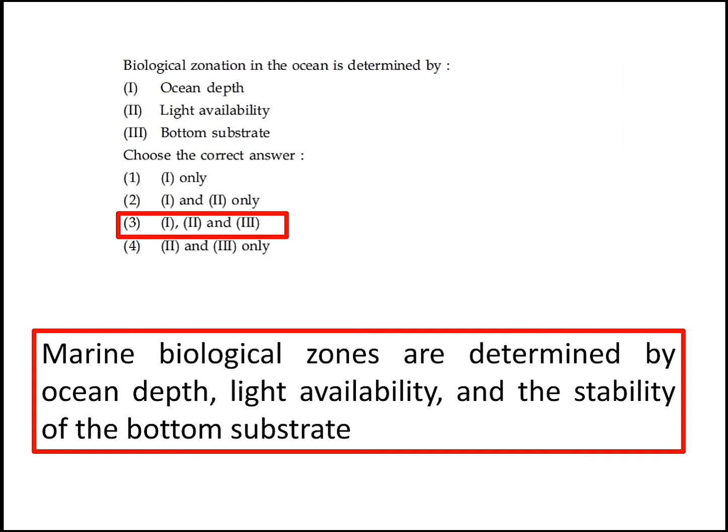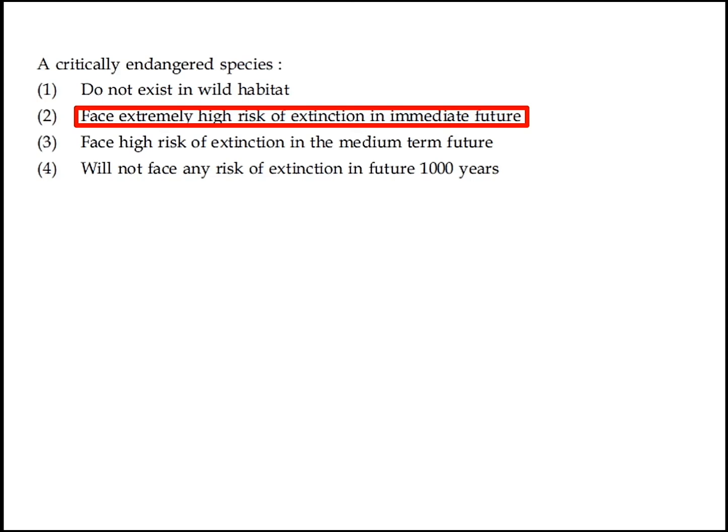Biological zonation in oceans is determined by ocean depth, light availability, and bottom substrate. Option 3 — 1, 2, and 3 — is the right answer. A critically endangered species faces an extremely high risk of extinction in the immediate future. Option 2 is the right answer.